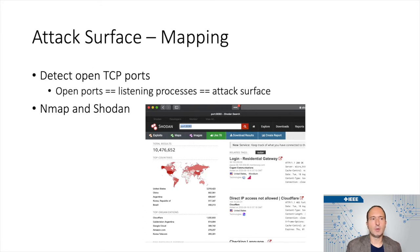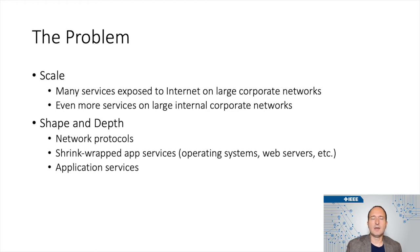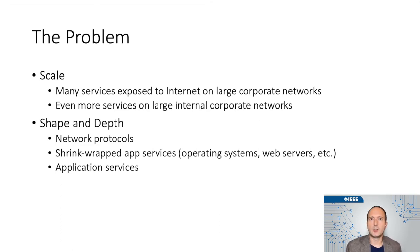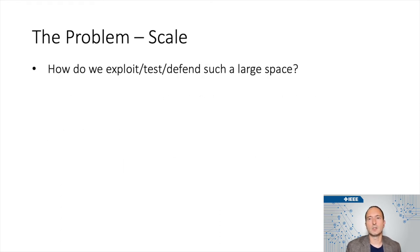So what's the problem we tried to solve? The attack surface is huge. Even if you're talking about just the external servers, there are so many services exposed to the Internet, and if you're talking about internal services, it's even bigger. Your application is just one part of the attack surface. There are also shape and depth problems — if we hadn't narrowed our scope, we'd also be talking about network protocols, fuzzing at the operating system level, shrink-wrapped apps like Apache web server, IIS, FTP servers, and higher-level application vulnerabilities like SQL injection and cross-site scripting. As you can see, the attack surface gets really complicated really quickly. So how do we exploit, test, or defend such a large space?